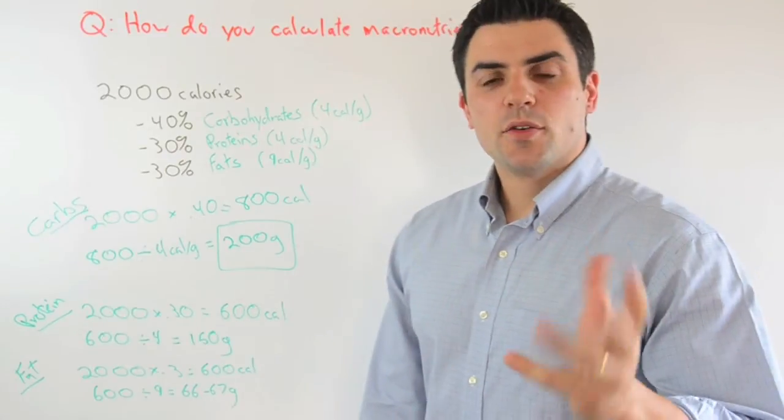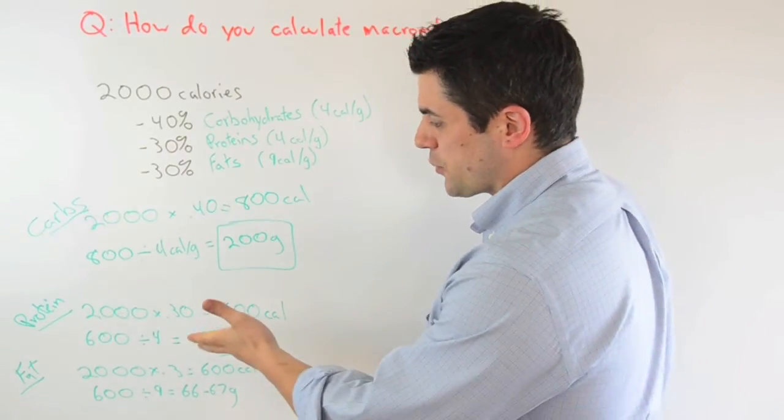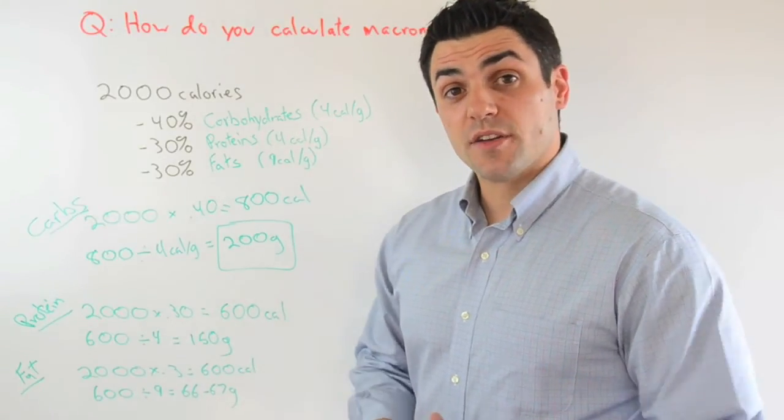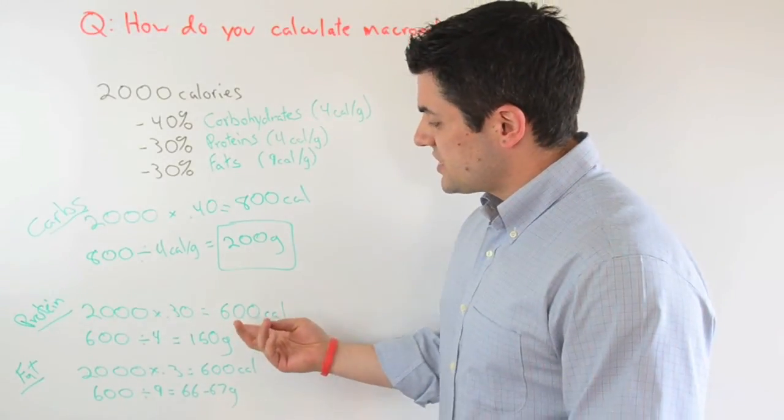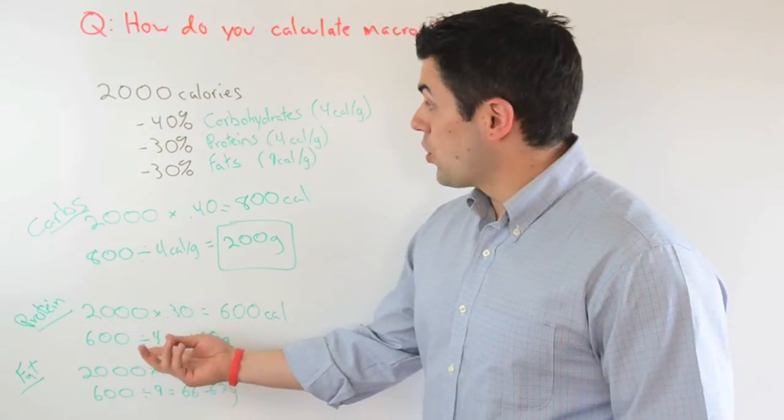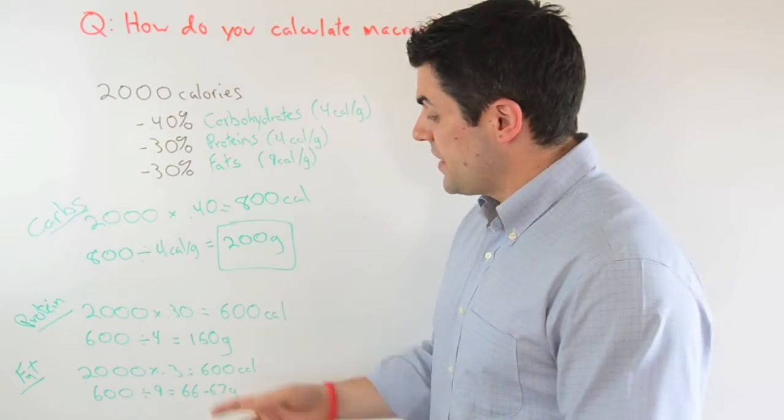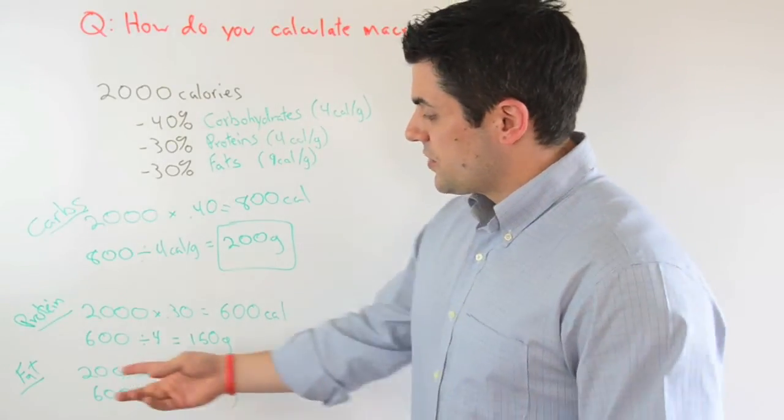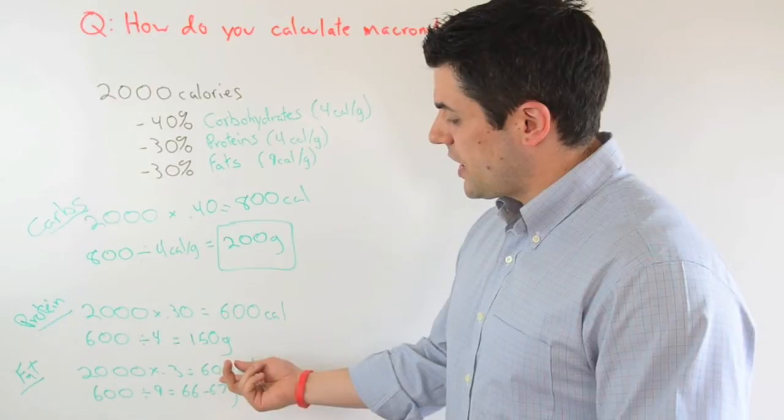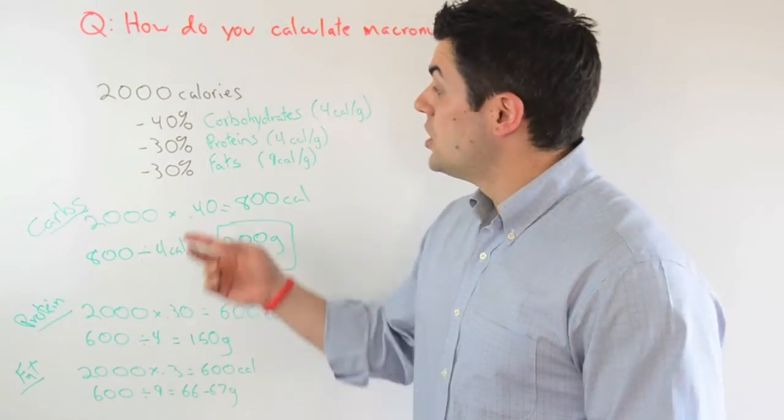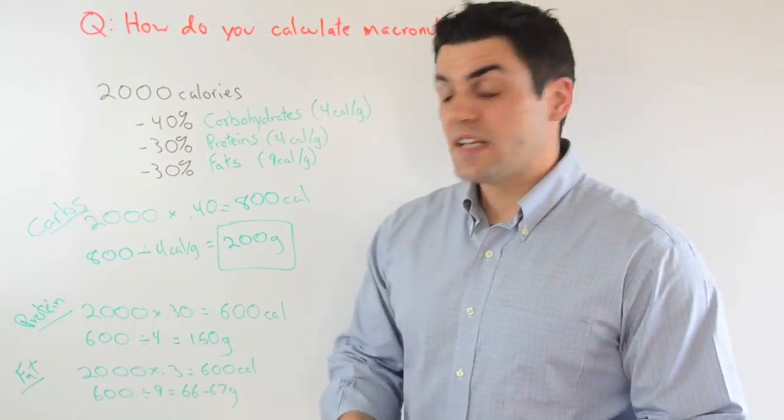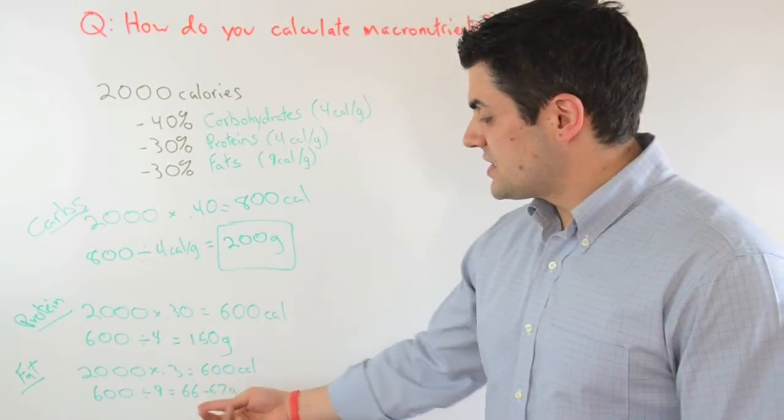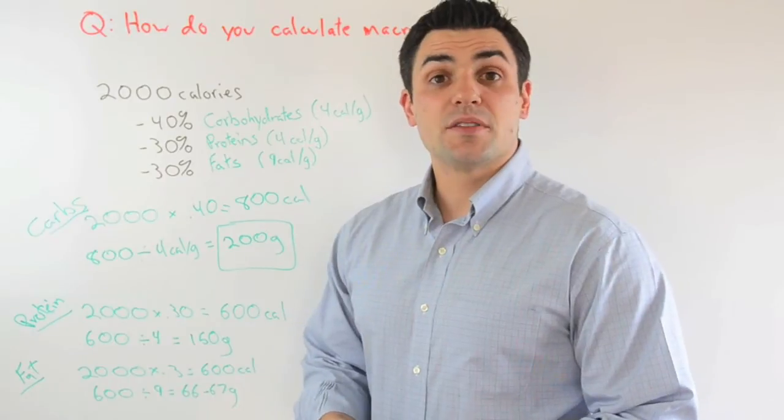Okay, so we did all the math really fast. And what we have here for protein, you see we took 2,000 calories times .3, because we want 30% of our calories from protein, gives us 600 calories. We divide that by four, because they're four calories per gram, and that gives us 150 grams of protein. So with fats, we want 30% from fat, so again we're at the same 600 calories. But because fats are more calorie dense, we divide by nine, and you get 66.6, so say between 66 and 67 grams of fat per day.